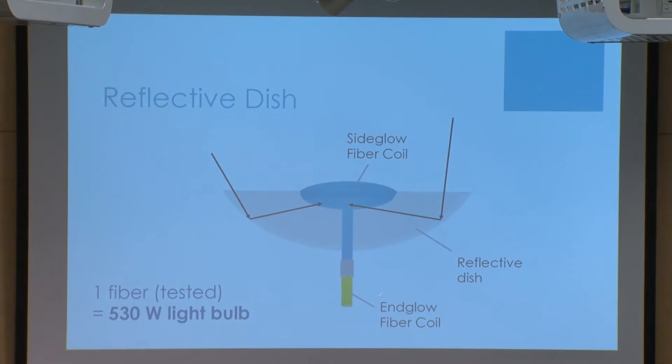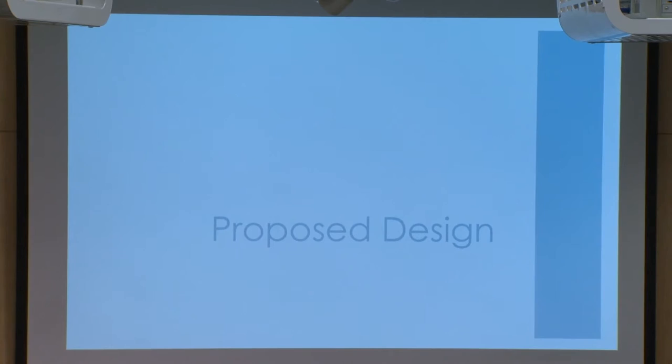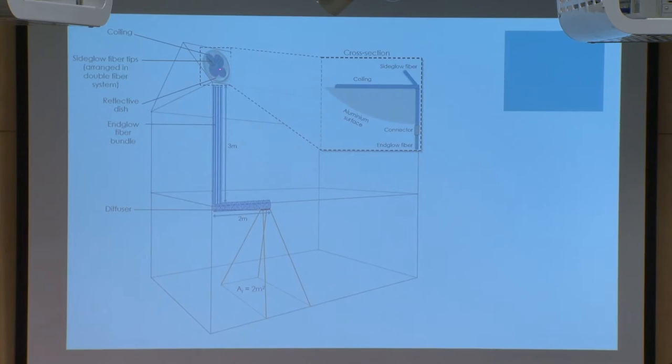I added an Anglo fiber component because if light is leaking in, there's a trade-off where light could still be leaking out. So you connect the side-glow coil to an Anglo fiber, which is designed to propagate light straight through rather than leak it out the sides. This is what the proposed design would look like: the side-glow coil collects light here, then you connect it to the Anglo fibers which transmit light throughout your structure, and then you have a diffuser area to illuminate.